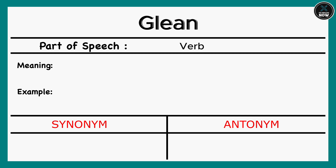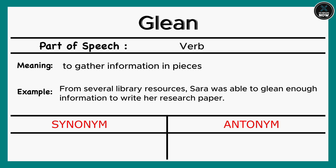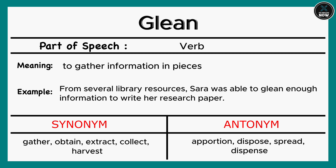Glean: To gather information in pieces. Example: From several library resources, Sarah was able to glean enough information to write her research paper. Synonyms: Gather, Obtain, Extract, Collect, Harvest. Antonyms: Portion, Dispose, Spread, Dispense.